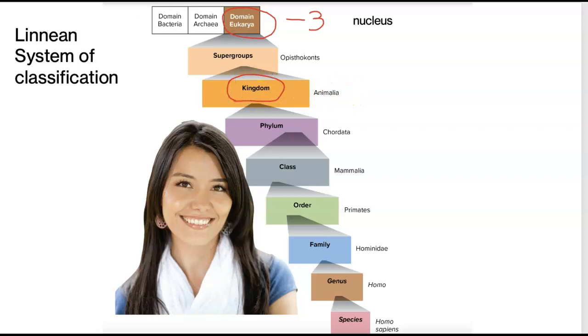All right, we're an animal. Why do we go here? Well, we go in kingdom animalia because we eat what we call heterotroph. We're multicellular, and we don't have a cell wall.